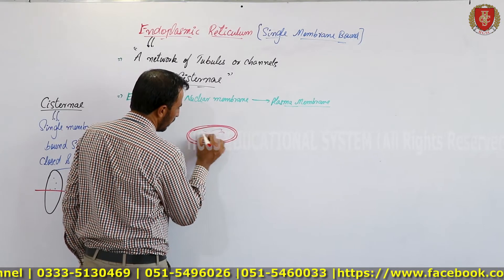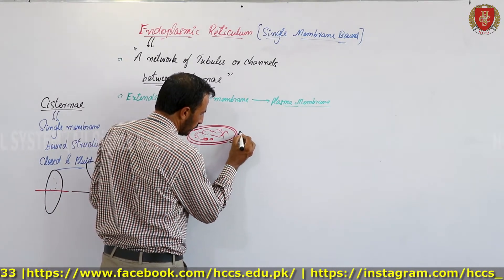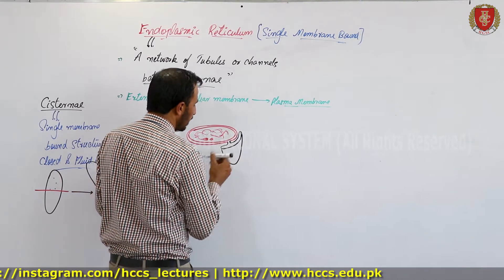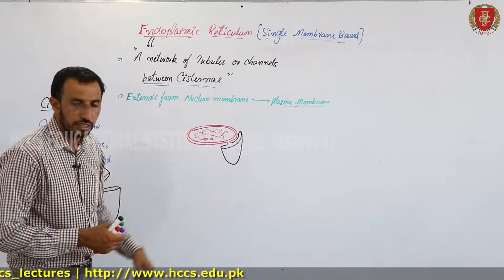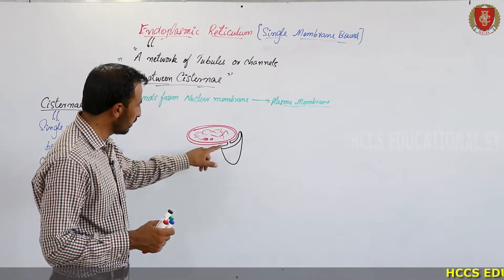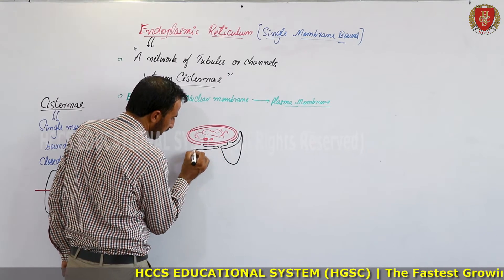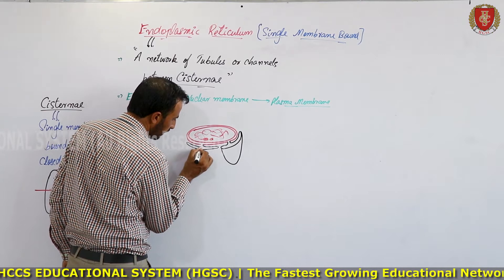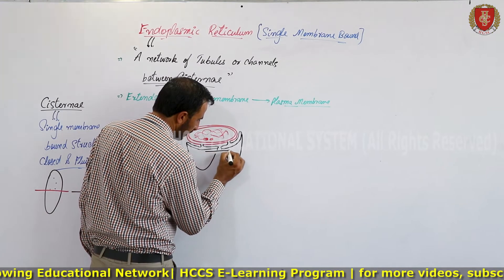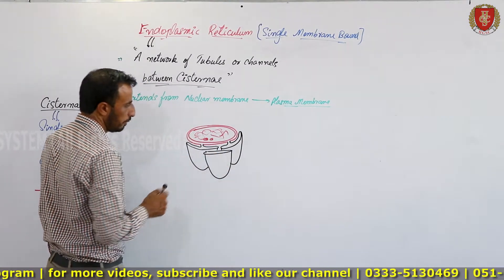Here is the nuclear envelope in three dimensions with the nucleus inside and the chromatin network. The cisternae are flat, closed membranes attached — or more precisely, continuous — with the nuclear envelope. I am drawing multiple cisternae here, one after another, to show how they are connected to the nuclear membrane.